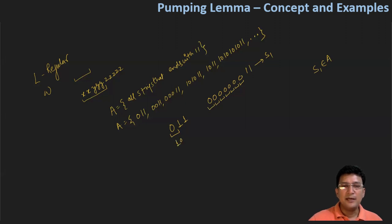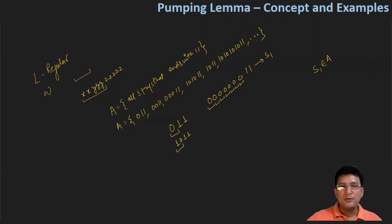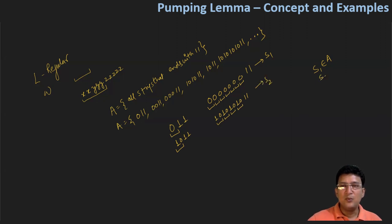Let's take another example. Let's say I have 1011. I'll select the '10' part and pump it. If I pump this '10' string many times, I get 101010 and then 11. So what I did is pump this '10' string many times. Let's call this string s2 — then s2 will be part of language A.